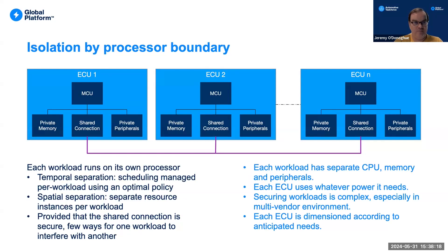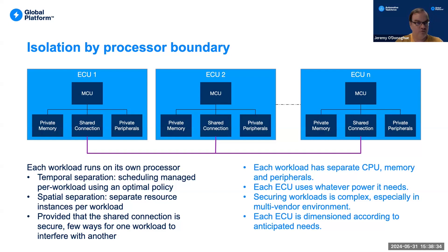We shall start with the simplest case: isolation by processor boundary. In this case, each workload has a processor, its own private memory, its own peripherals, and it might talk to other processors through some sort of shared bus. Essentially, each workload is completely isolated on a separate computer. This is the traditional ECU model used in automotive, and it's often also used in industrial control.